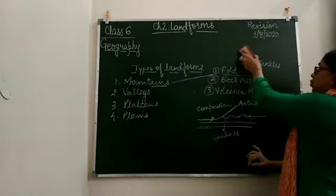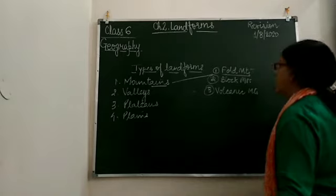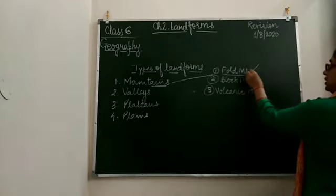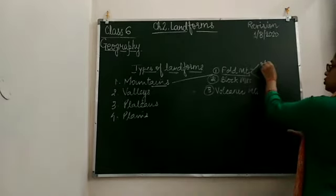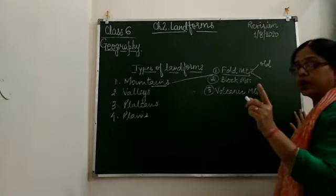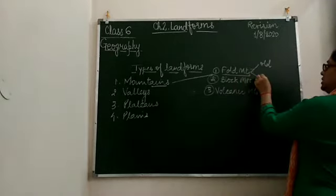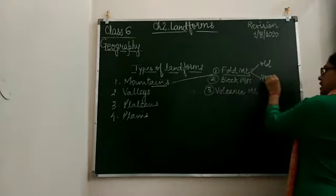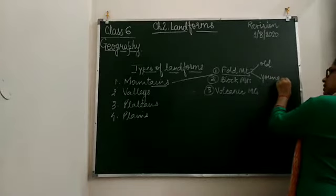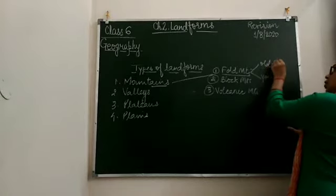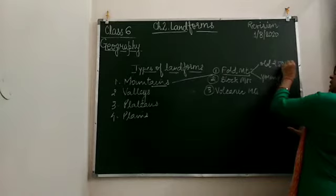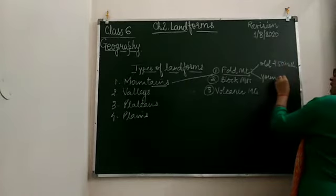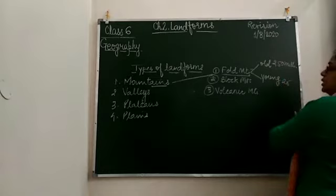Now, fold mountains are of two types: young fold mountains and old fold mountains. Old fold mountains were formed 250 million years ago, and young fold mountains were formed 25 million years ago. Just remember some examples in the world related to young fold mountains and old fold mountains.